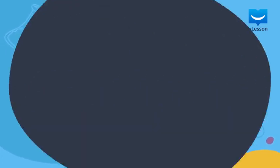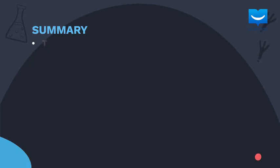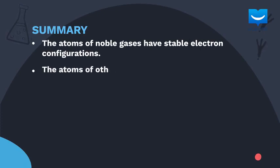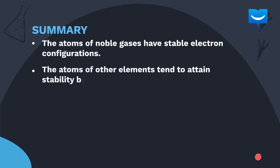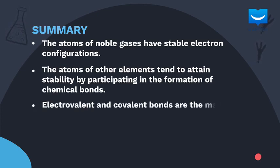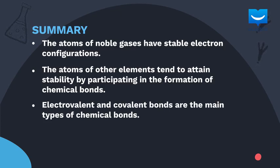Let's summarize what we've learned so far. The atoms of noble gases have stable electron configurations. The atoms of other elements tend to attain stability by participating in the formation of chemical bonds. Electrovalent and covalent bonds are the main types of chemical bonds. That's all for this lesson.